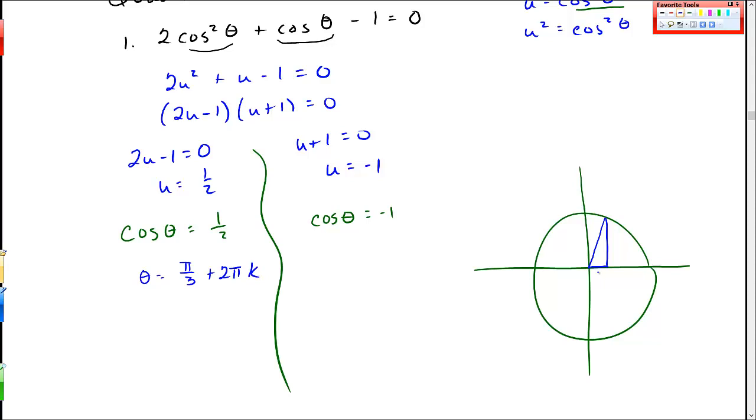This also is positive 1 half down here for this triangle. And so that's all the way around, I believe that should be 5 pi over 3 plus 2 pi k. So those are the two general solutions to come out of this 1 half.